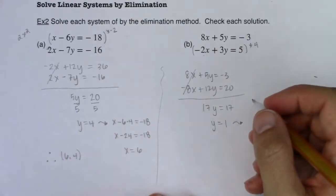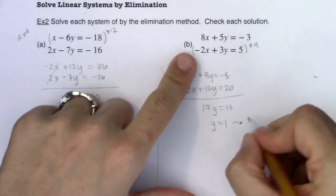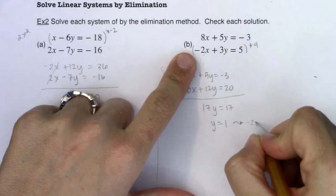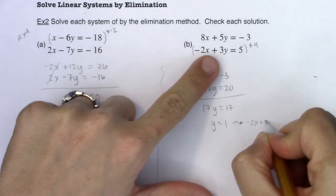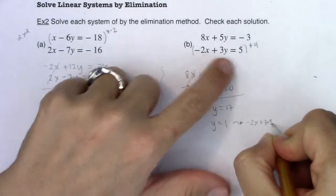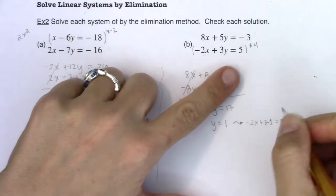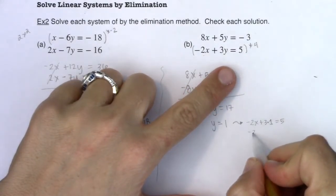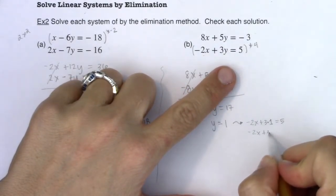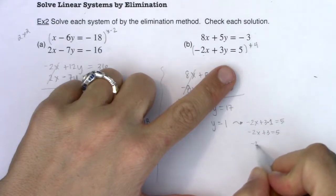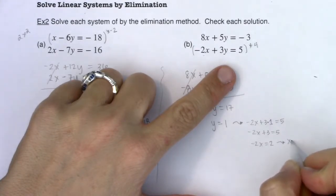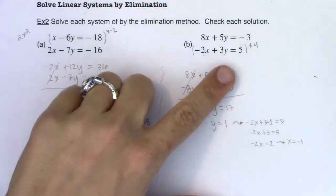I'll go with the second equation this time out only because I picked the first equation before. So this would be negative 2x plus 3 times y, which we know is 1, should be equal to 5. So I have here a negative 2x plus 3 is equal to 5. So I think negative 2x is equal to 2 and that's telling me x is equal to negative 1.